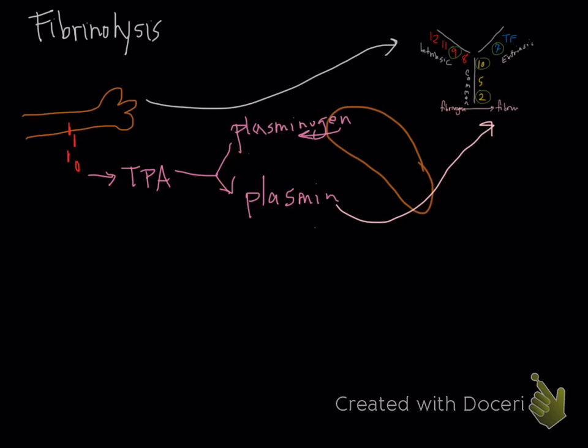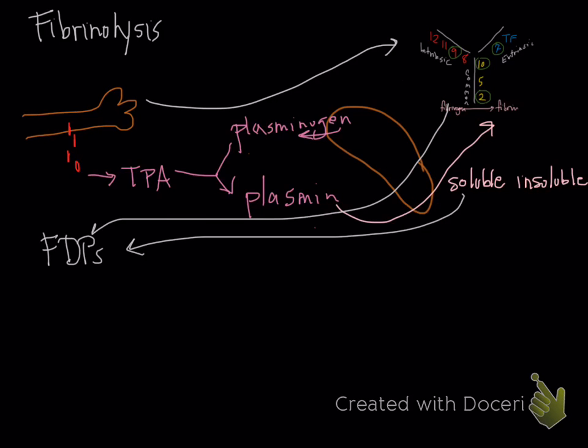There's two forms of fibrin. One is non-cross-linked, which we call soluble fibrin. The other one is cross-linked fibrin, which is also considered insoluble fibrin. When fibrin is actually broken down, you get different products. These are called fibrin degradation products, or FDPs. They form when soluble fibrin is broken down. But they also form when fibrinogen is broken down.